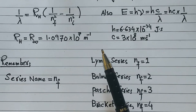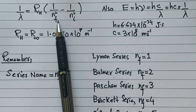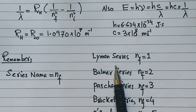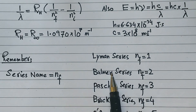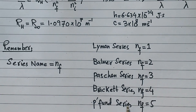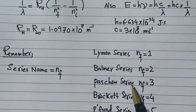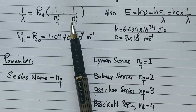This is very easy. For each series, NF is defined as follows: if it's the Lyman series, NF is 1; if it's the Balmer series, NF is 2; if it's Paschen series, NF is 3; if it's Brackett series, NF is 4; if it's Pfund series, NF is 5. The name of the series tells you NF. This is the formula — this is the key issue, and now it is solved.